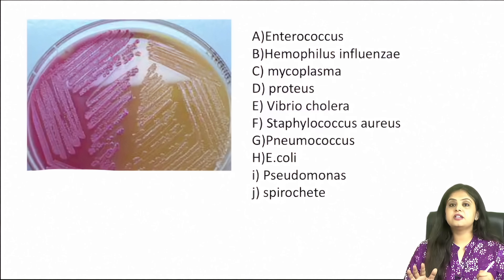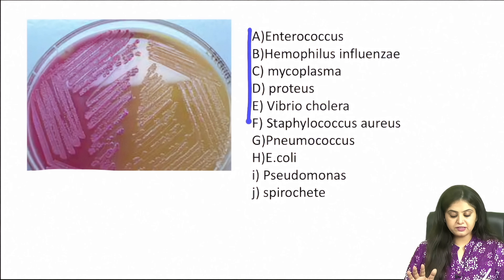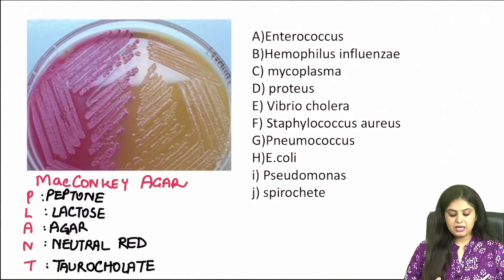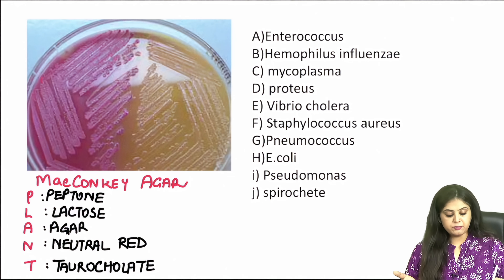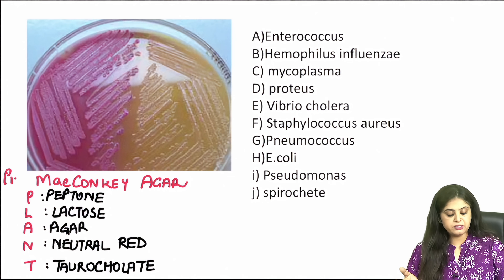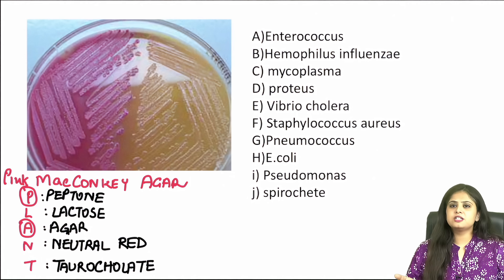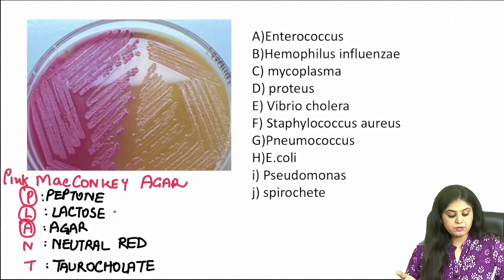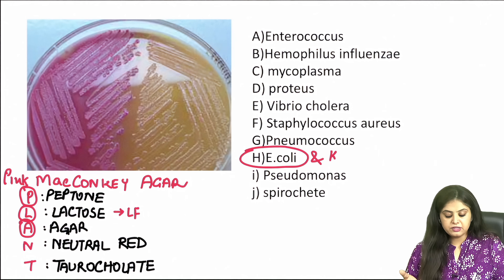The next culture media given is the same list of organisms. This is the very famous MacConkey agar, learned by the mnemonic PLANT. A pretty pink plant tells me: P is for peptone, A is for agar — because every culture media will have peptone and agar — L is for lactose, because here we are testing for lactose fermentation. The answer becomes E. coli because E. coli and Klebsiella are the two lactose fermenters.